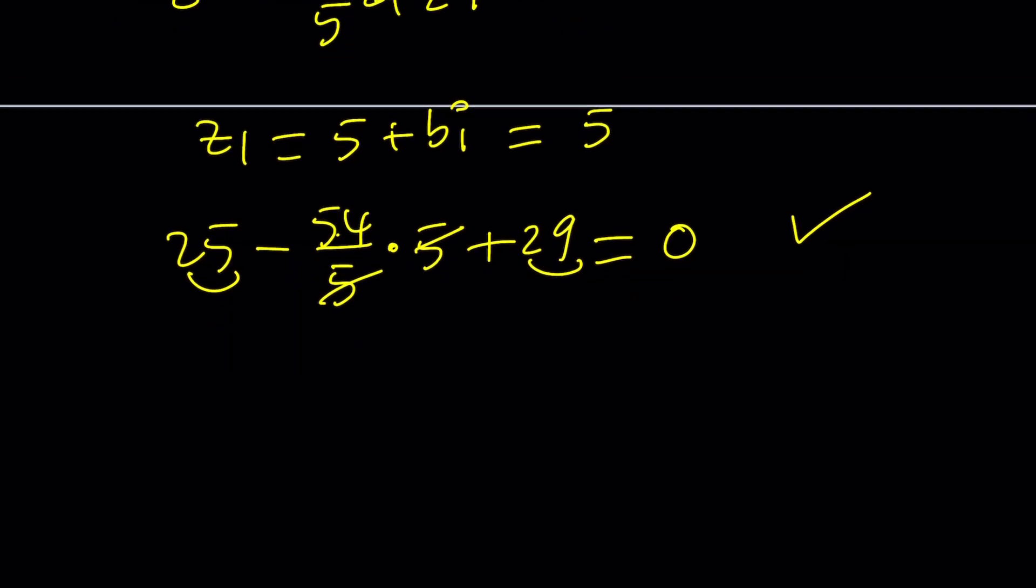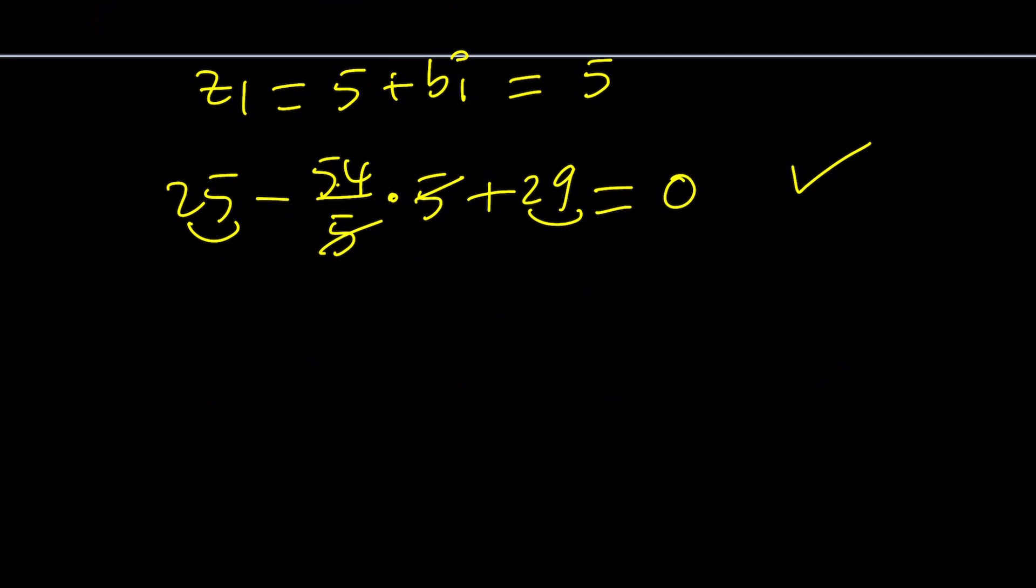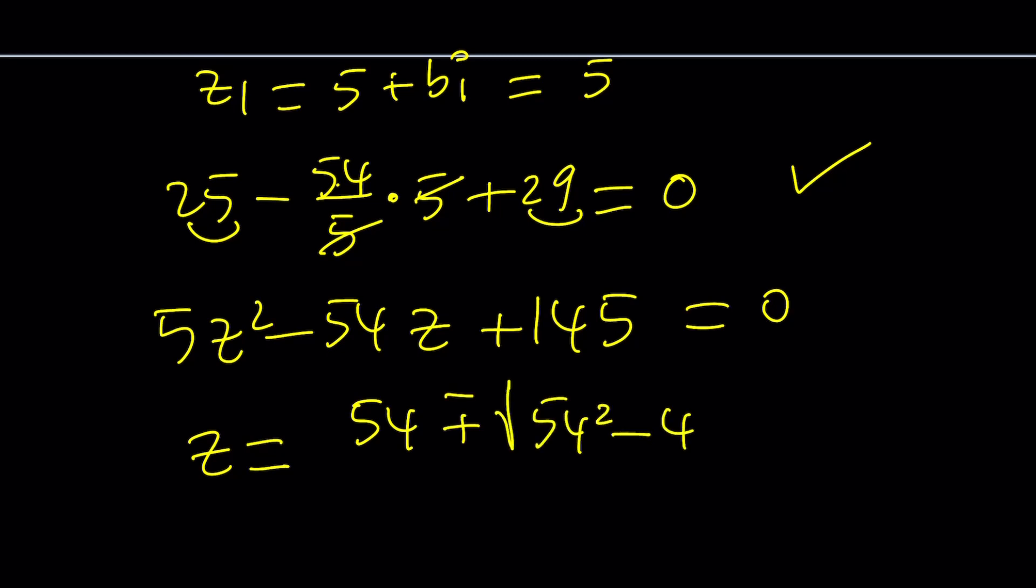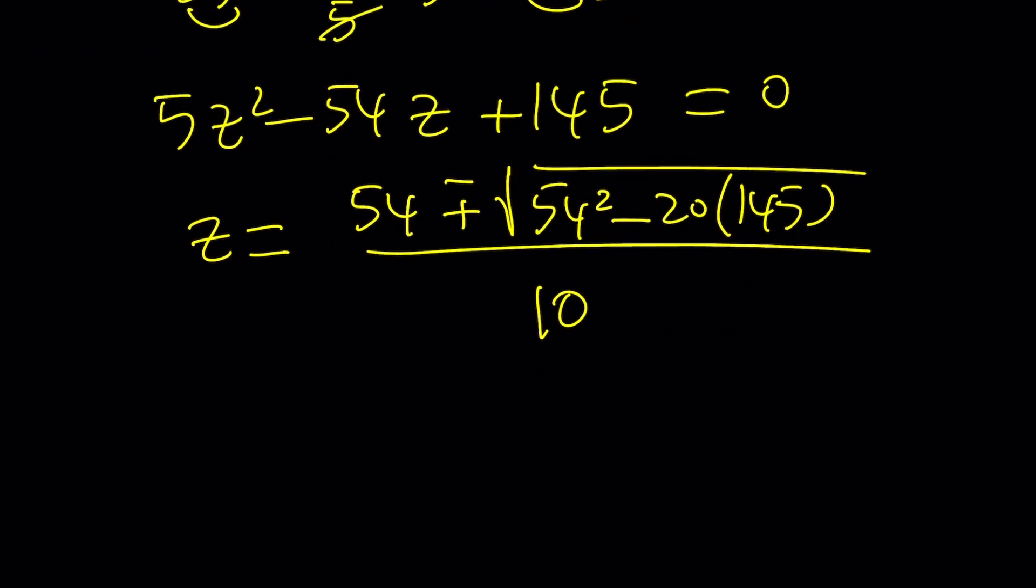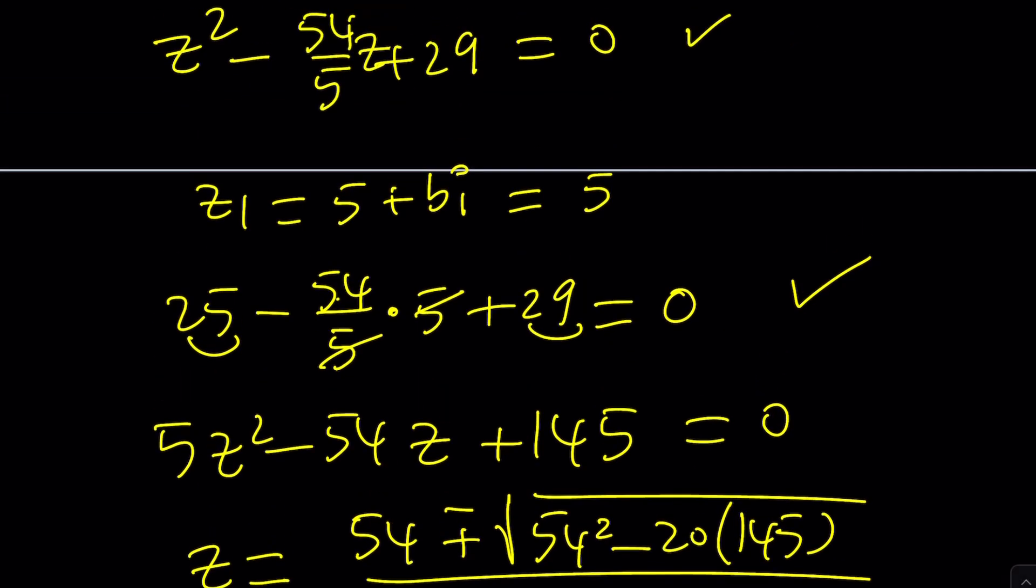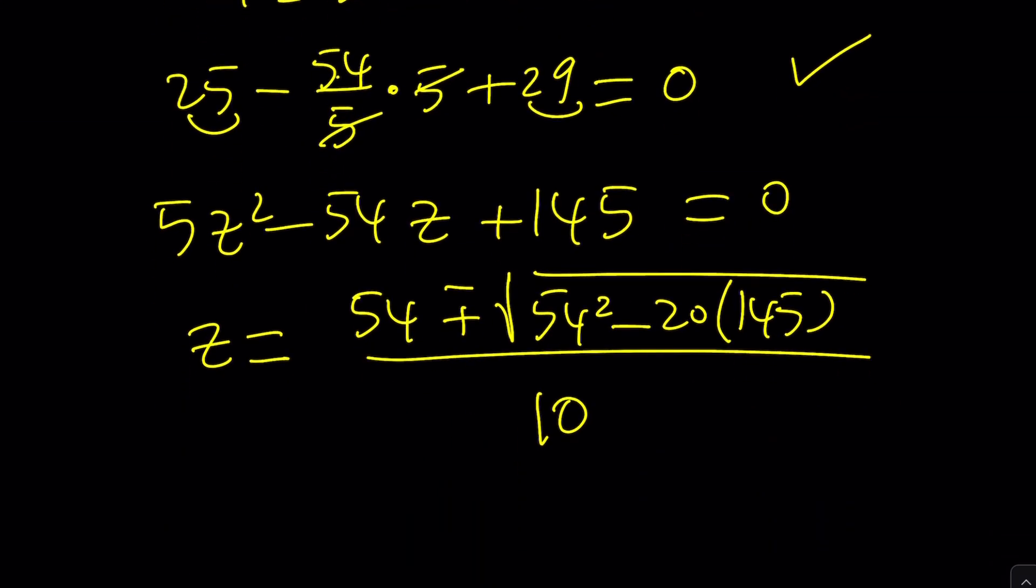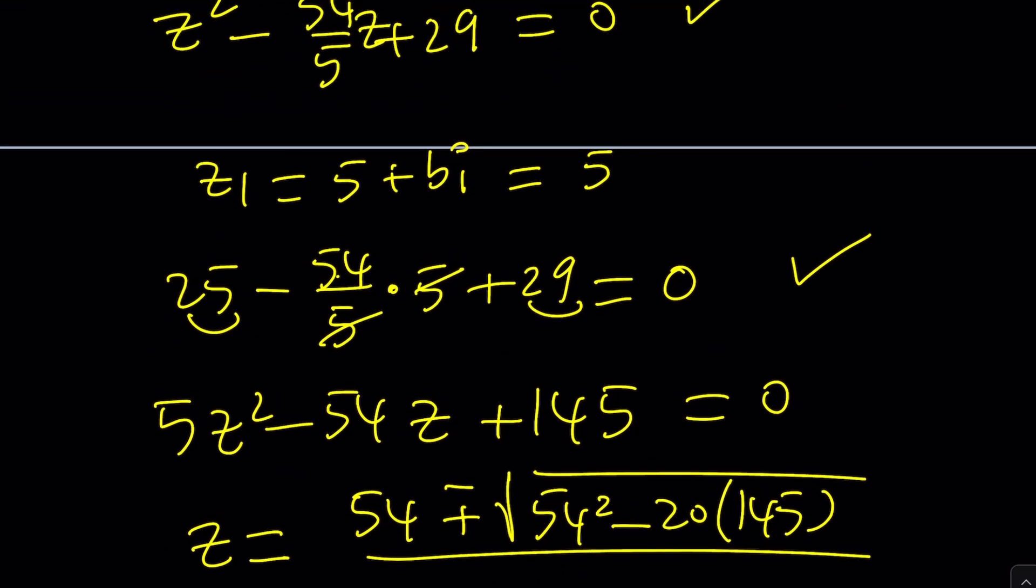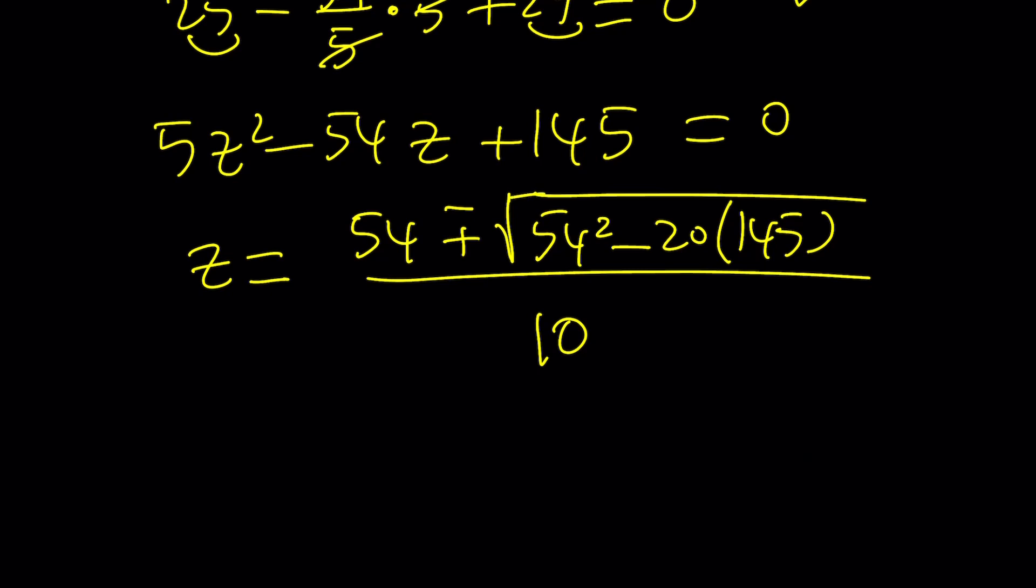So we can basically do the following. Let's multiply both sides of this equation by 5. We get 5z squared minus 54z plus 145 equals 0. And by using the quadratic formula, we get z equals 54 plus minus the square root of b squared minus 4ac, which is going to give us 20 times 145. And that is all divided by 2 times 5, which is 10. Now remember, one of the roots of this equation is 54 over 5, or the k value is 54 over 5. One of the roots is actually 5.